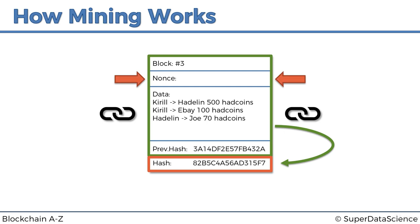We can't change the block number because the block number is the block number. We can't change the previous hash because it's linked directly to what we have in the previous block. And we can't change the data because that would mean tampering with the data, which defeats the purpose of a blockchain — it has to be an immutable ledger. So because we have the nonce, we are free to change its value. The nonce is just a number, and varying it allows us to vary the hash. We cannot predict what the hashing algorithm will spit out, but we can vary the hash by varying the nonce.